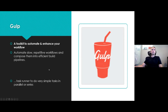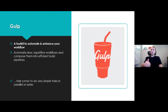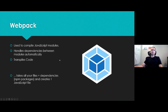Gulp is a toolkit that automates and enhances workflow within your projects. It does repetitive tasks over and over and you can chain them into a pipeline to create build pipelines. It's a task runner — it does simple tasks in parallel or series. When building your files, it will copy a file from folder to folder, rename things, minify, and bundle. So if you save a file, you want it to just rebuild — that's the technology that does that.